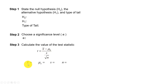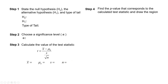We need four numbers: the sample mean, the assumed population mean, the sample standard deviation, and the sample size. Once we have the test statistic, we compute a p-value. Most of the time we will let StatCrunch compute steps three and four.